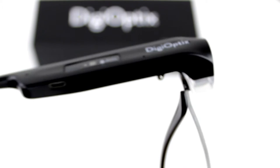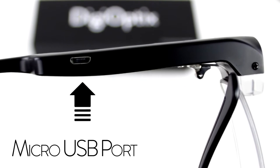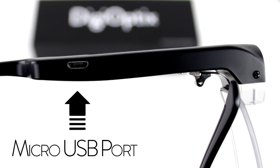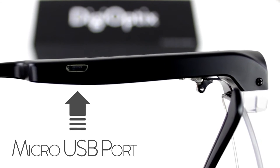On the bottom side of the band is a micro USB port. This can be used for both charging and connecting your Bluetooth headset.